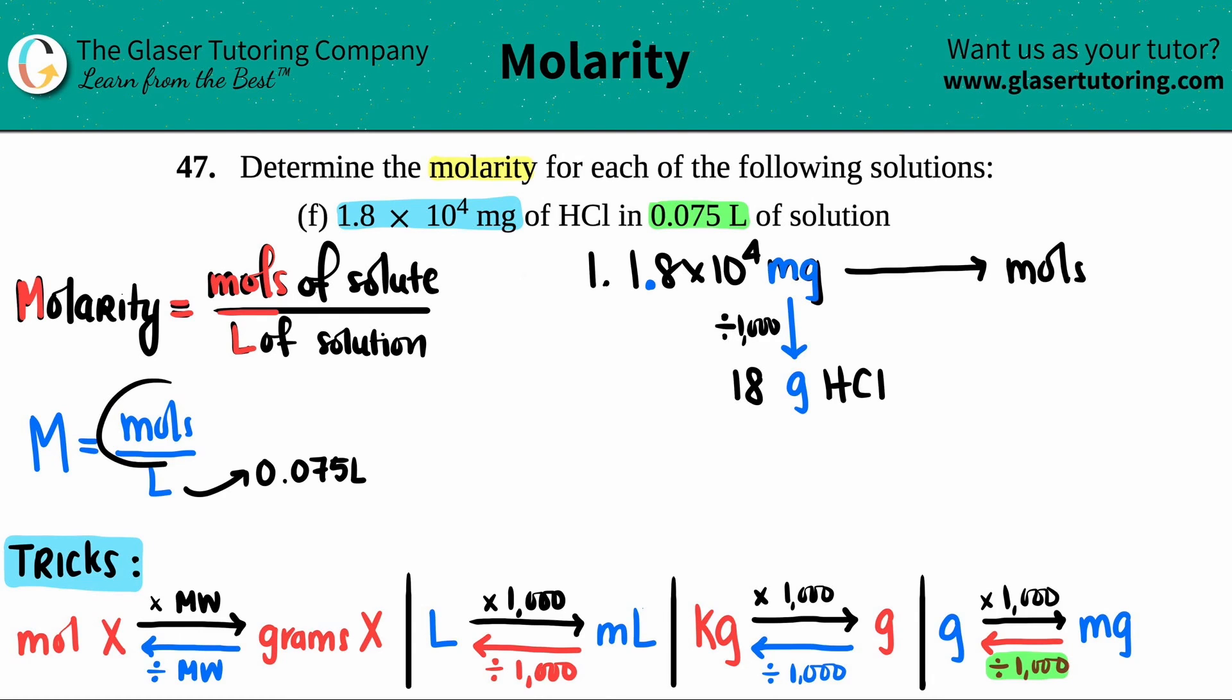I'm almost there. I still got to get to moles, so somehow I have to go from grams to moles. That's this little thing over here. I have a gram value and need to go to moles, so I'm going this way. All you have to do is take the number that you have—in this case 18 grams—and just divide by the molecular weight.